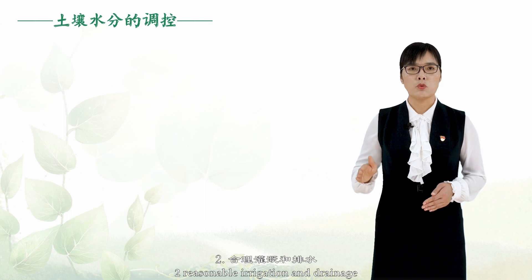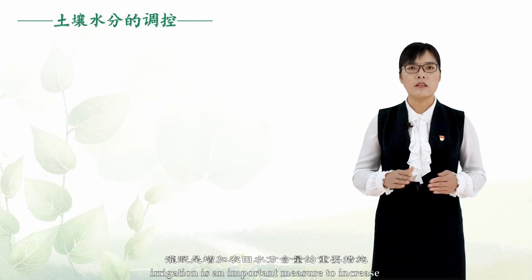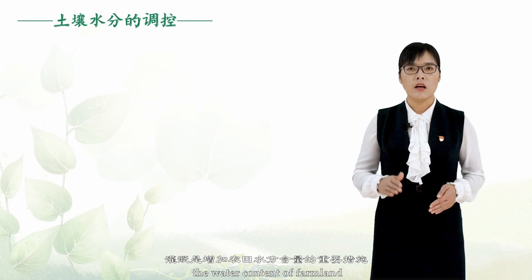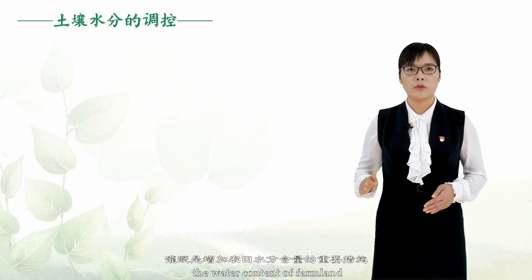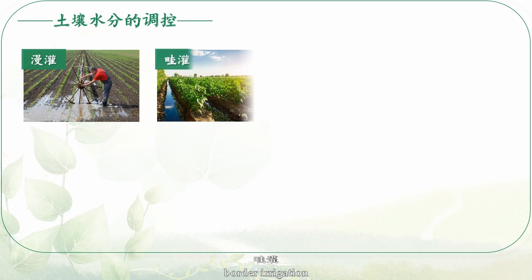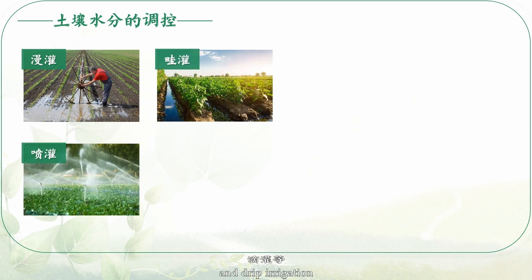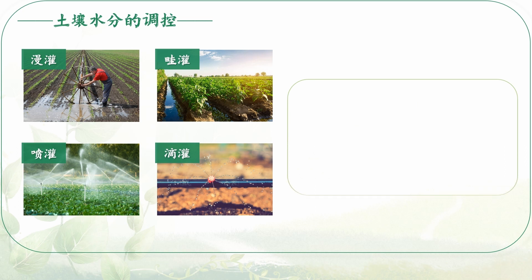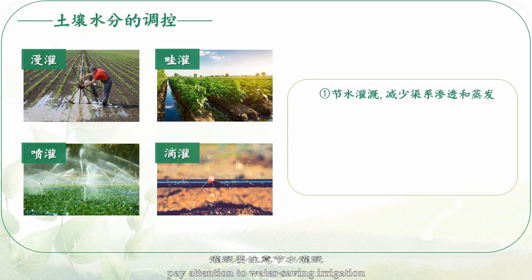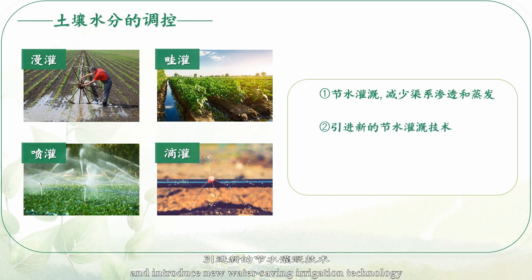2. Reasonable irrigation and drainage. Irrigation is an important measure to increase the water content of farmland. Irrigation methods include flood irrigation, border irrigation, sprinkler irrigation, and drip irrigation. Pay attention to water-saving irrigation, reduce canal leakage and evaporation, and introduce new water-saving irrigation technology.